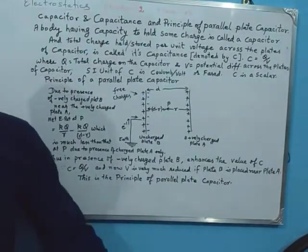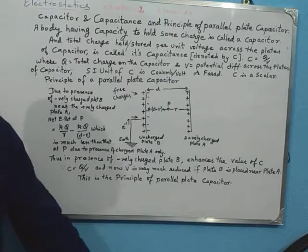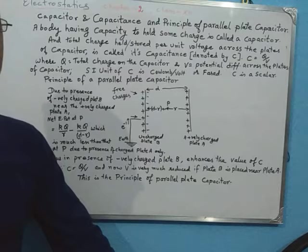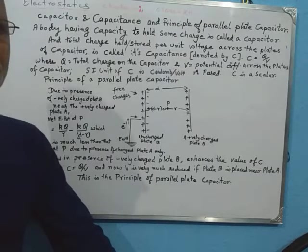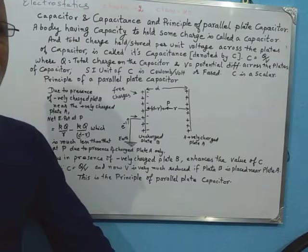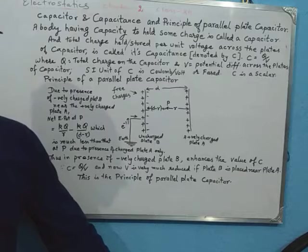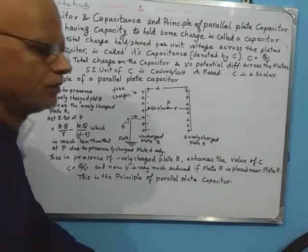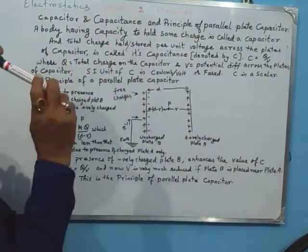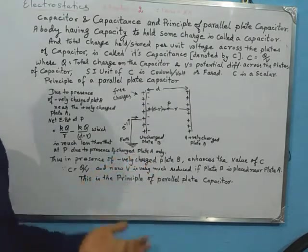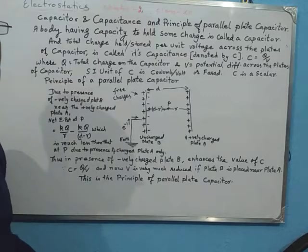Today we are going to learn further about capacitance — what is a capacitor, how we define its capacitance, and the principle of the parallel plate capacitor, meaning how we enhance the capacity of holding charge of any metal sheet. A capacitor is any body which can hold some charge. Any metal sheet on which you can place some charge and it will remain there is known as a capacitor.